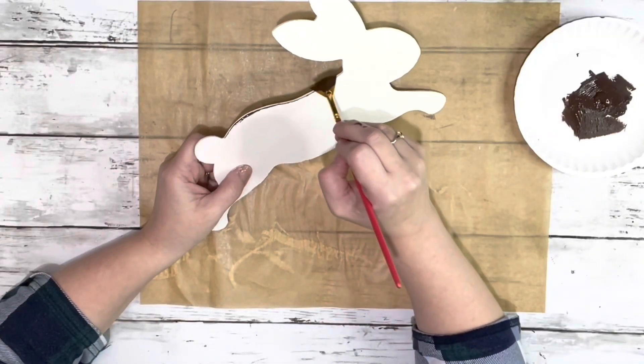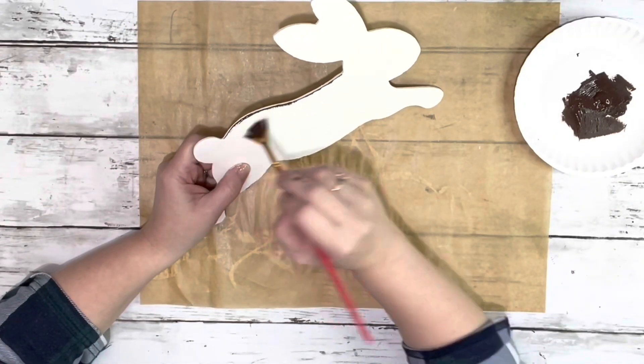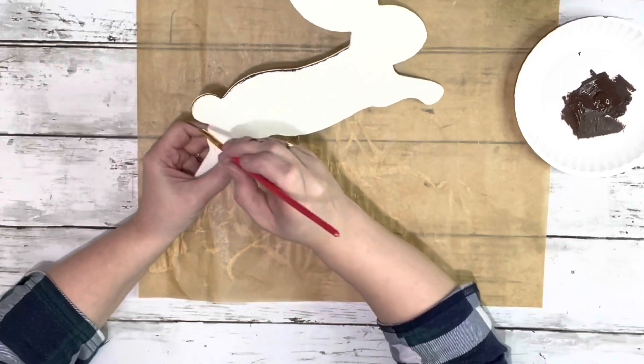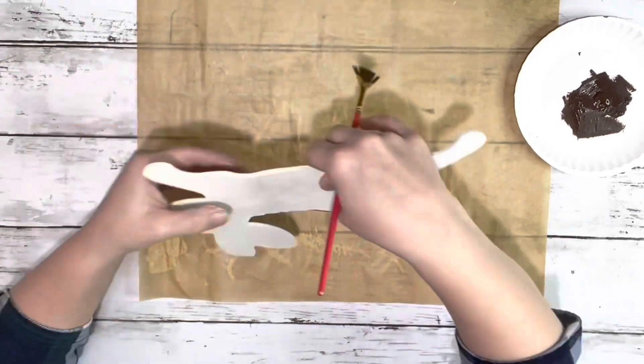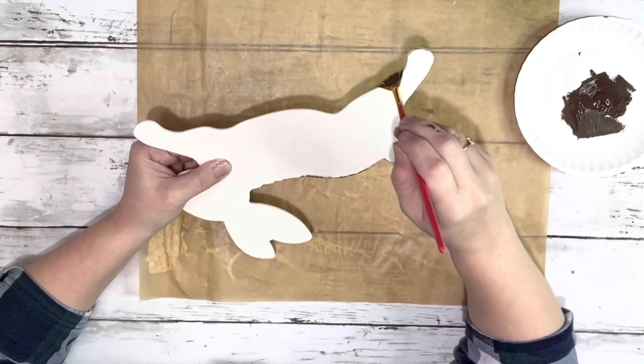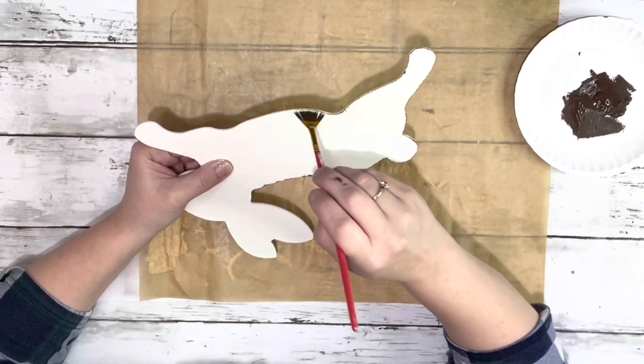Then I took the same burnt umber color in a fan brush and just dry brushed all along the edge of the bunny, just to give it a little bit of texture around the edge and a little bit of color.